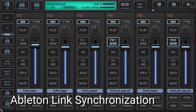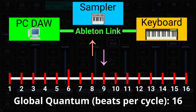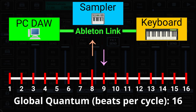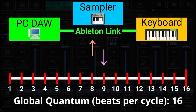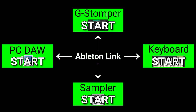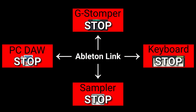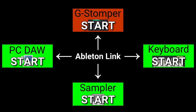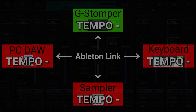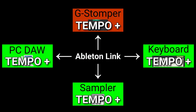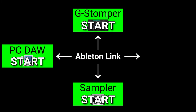Ableton link synchronization: if you join an Ableton link session, the global quantum beats per cycle is used as a loop cycle measure to be synchronized with the session. Ableton link is a technology that synchronizes musical beat, tempo, phase and start/stop commands across multiple link-enabled applications running on one or more devices. Applications on devices connected to a local wireless network discover each other automatically and form a musical session. Anyone can start or stop while staying in time, anyone can change the tempo and others will follow, and anyone can join or leave without disrupting the session.